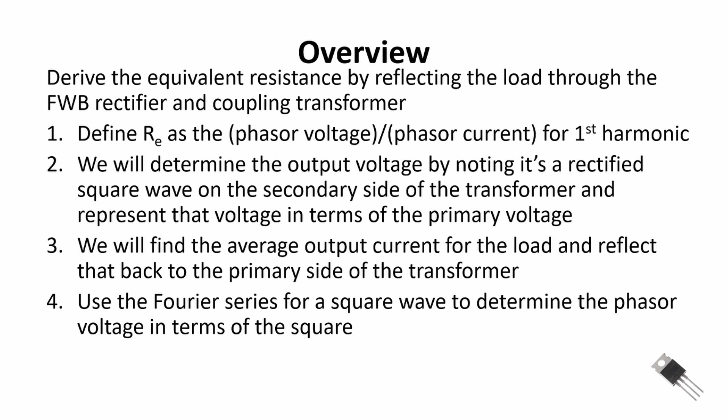First, we're going to define RE as a phasor voltage divided by the phasor current for the first harmonic — that's our definition for the equivalent resistance. In the second step, we're going to determine the output voltage by noting it's a rectified square wave on the secondary side of the transformer as well as on the primary side, and then represent that voltage in terms of the square wave on the primary voltage, which is driven by our switching DC to AC inverter system — the half bridge.